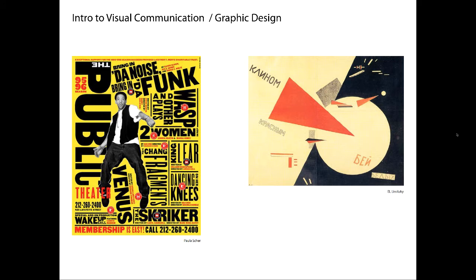Typography is a huge deal in graphic design. Typography is the art of taking words and letter forms and putting them together to deliver a specific message. The image on the left we would call a type-dominant layout. This was not common until the early 1990s — Paula Scher, a New York designer, came up with this in a very influential poster. The one on the right is by El Lissitzky, a great designer from Russia.